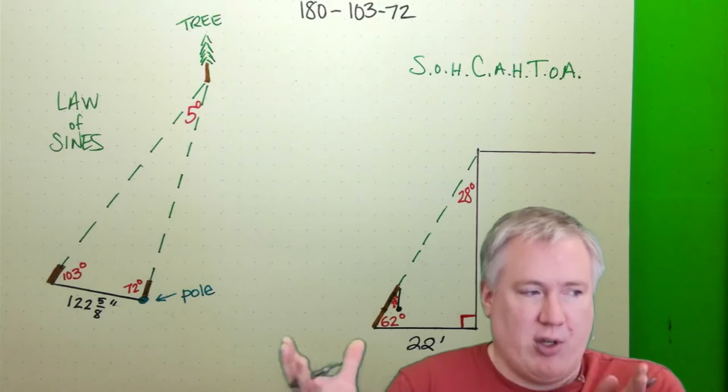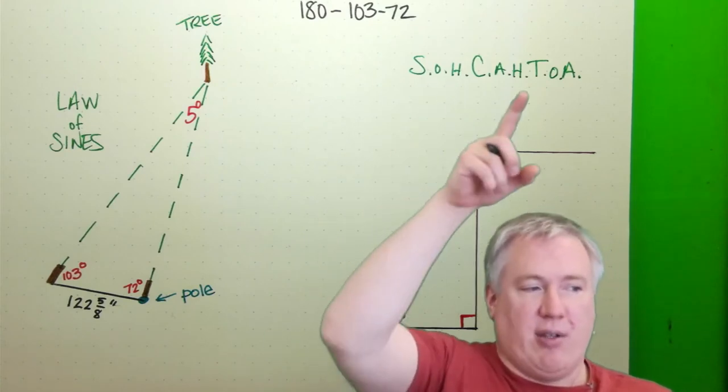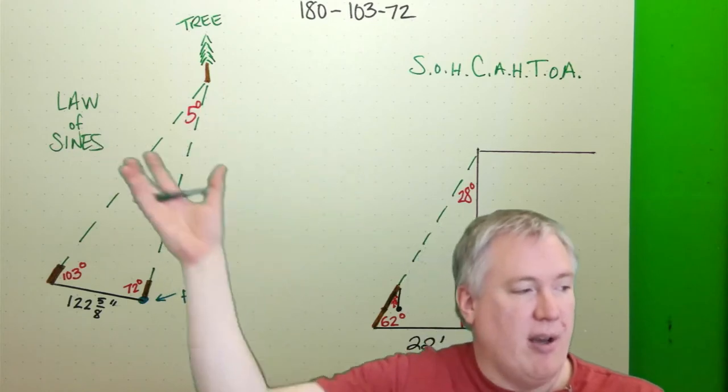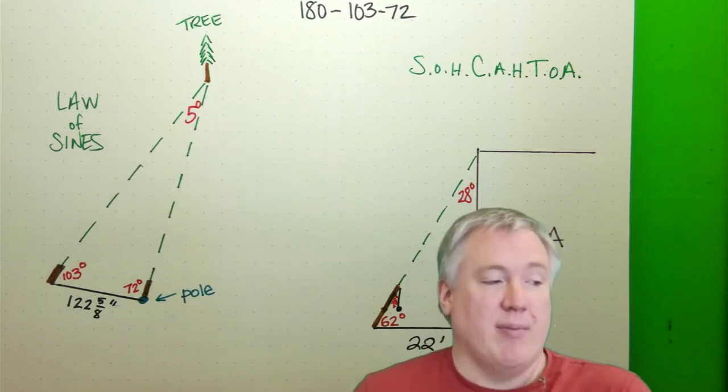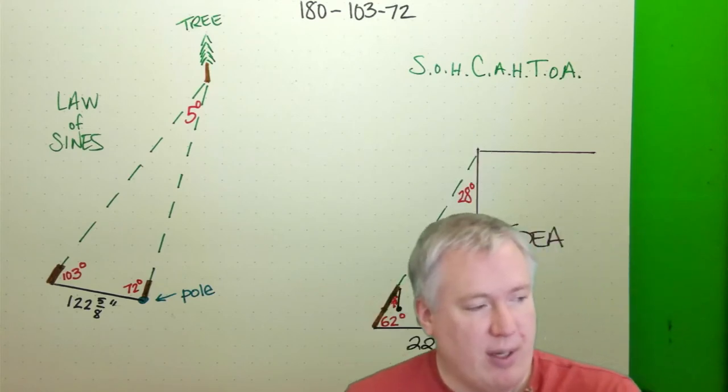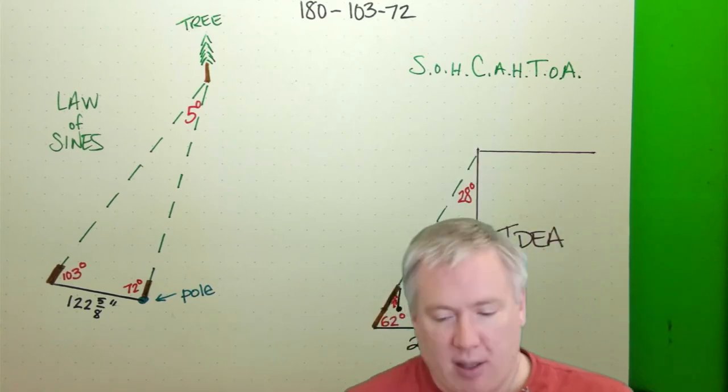So first step is just to know, should I be doing sine, cosine, or tangent? Or should I be doing the law of sines? And basically it comes down to, is there a right angle? If the answer is yes, sine, cosine, tangent is the way to go. If the answer is no, then law of sines.